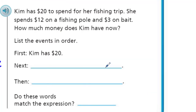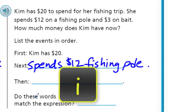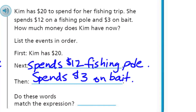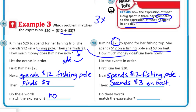Let's look at the next one. Kim has $20 to spend for her fishing trip. She spends $12 on a fishing pole and $3 on bait. Do these words match the expression? Yes, they do, because now we have two spending situations. She's subtracting $12 for the fishing pole and subtracting $3 on bait. Both need to be subtracted from the $20 she started with — that's the sum of 4 and 3 subtracted from 18. Yes, these match.